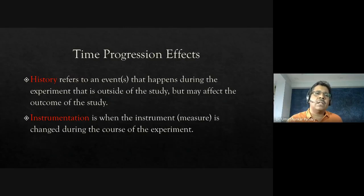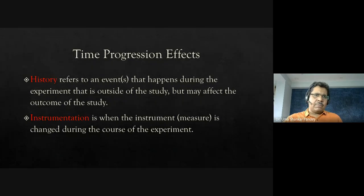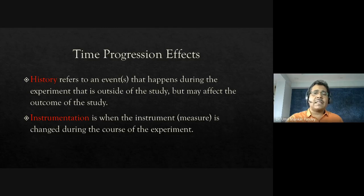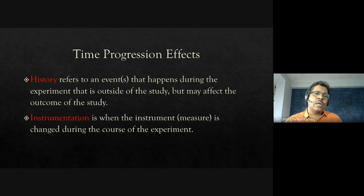Maturation is a naturally occurring process — participants develop mentally, physically, and emotionally over time. For example, before the pandemic nobody knew what Zoom was, but now people are much more experienced with online technology. Mortality — unlike its literal meaning — refers to participants who start the experiment but do not finish it; if participants drop out, I cannot measure the effect on those same individuals.